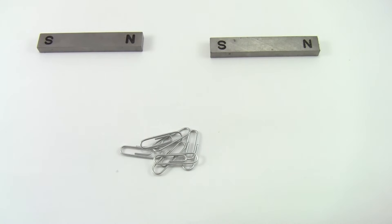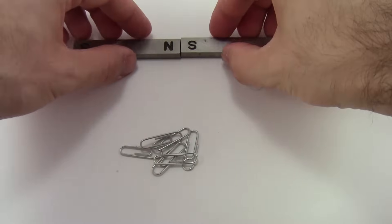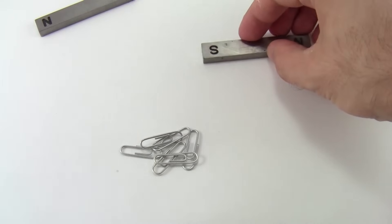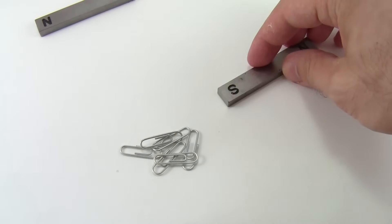You might already know about regular magnets. They have opposite poles that attract, similar poles that repel, and they can even attract other metal objects that don't attract each other, like these paper clips.